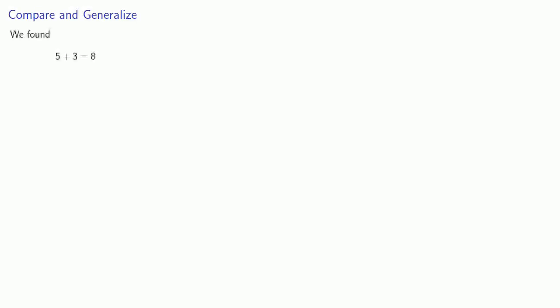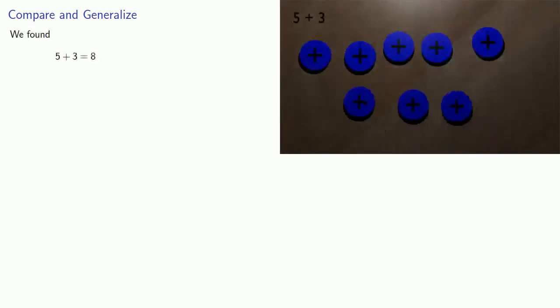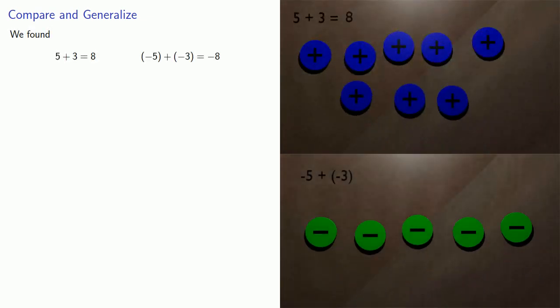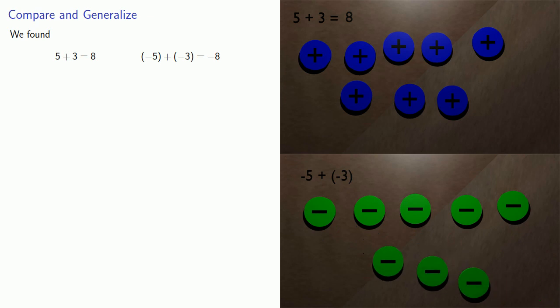So let's compare and generalize. We found that five plus three is equal to eight, and the additive inverse of five plus the additive inverse of three is the additive inverse of eight.